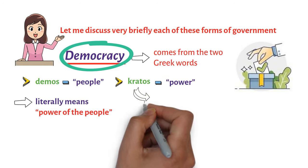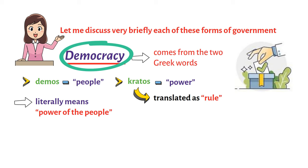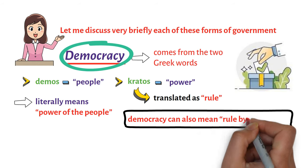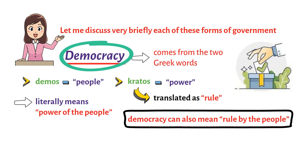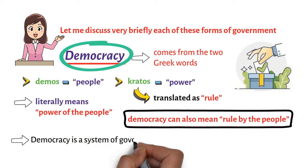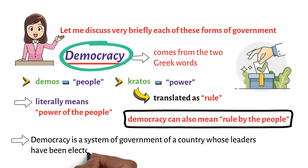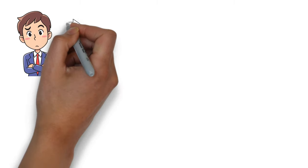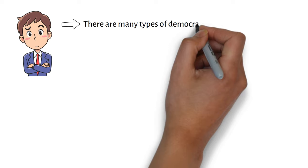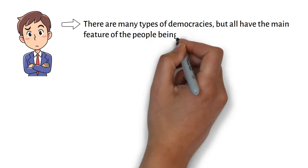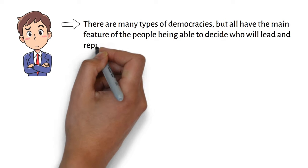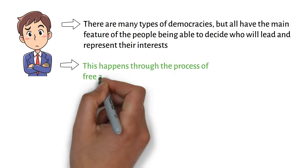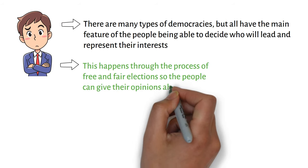Sometimes the word kratos is translated as rule. For this reason, democracy can also mean rule by the people. Formally speaking, democracy is a system of government of a country whose leaders have been elected by the people. Therefore, the power is with the people. There are many types of democracies, but all have the main feature of the people being able to decide who will lead and represent their interests. This happens through the process of free and fair elections so the people can give their opinions about issues occurring in their communities.